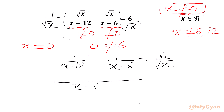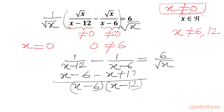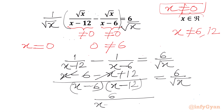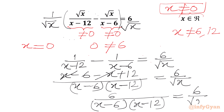Now we will take LCM of (x minus 6) times (x minus 12). On the left side we get x minus 6 minus (x minus 12), which gives us x minus 6 minus x plus 12. The x terms cancel and 12 minus 6 is 6, so we get 6 over (x minus 6)(x minus 12).